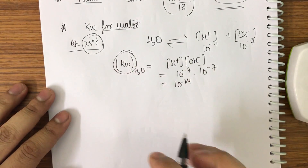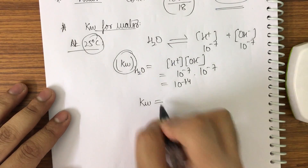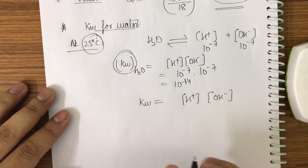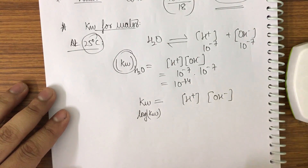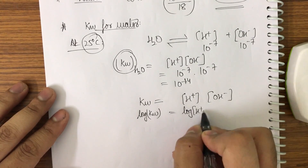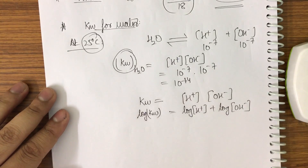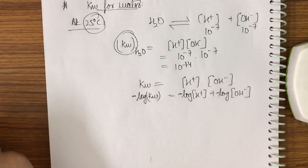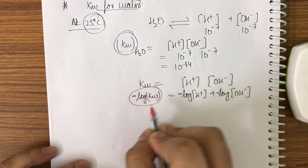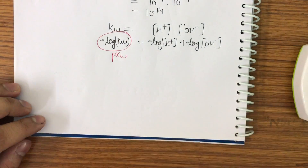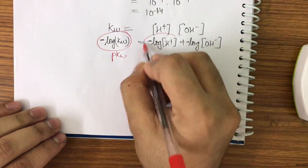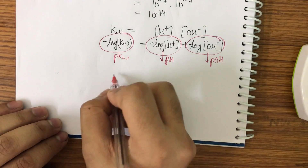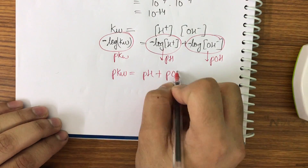Now let me take the log on both sides. Kw equals H⁺ times OH⁻. Taking log on both sides: log Kw equals log[H⁺] plus log[OH⁻]. Now applying minus log throughout — minus log Kw gives pKw, minus log[H⁺] gives pH, and minus log[OH⁻] gives pOH. So we get: pKw equals pH plus pOH.